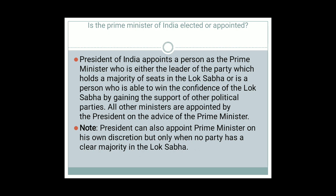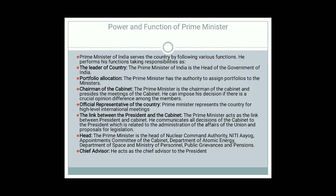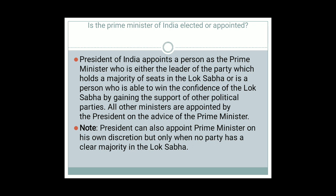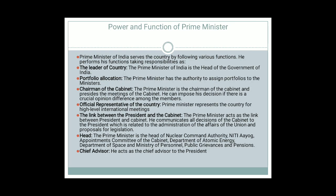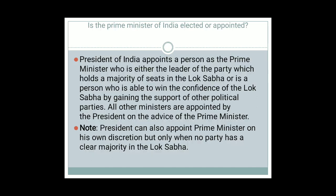The President of India appoints a person as Prime Minister as given under Article 75, and it is elected by the people of India. Article 74 of the Constitution lays that there shall be a Council of Ministers with the Prime Minister at the head to advise the President, who shall exercise his functions with such advice. Though the President appoints the Prime Minister, generally the President has no real choice in the appointment and invites the leader of the majority party in the Lok Sabha for this office.